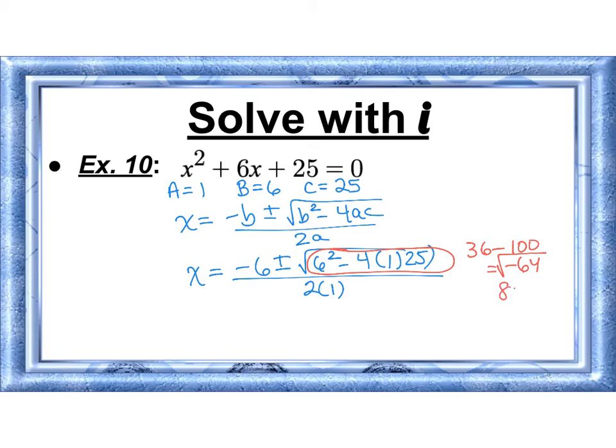So we have negative 6 plus or minus 8i over 2. Remember, we can separate our fraction. So negative 6 over 2 plus or minus 8i over 2 becomes negative 3 plus or minus 4i.